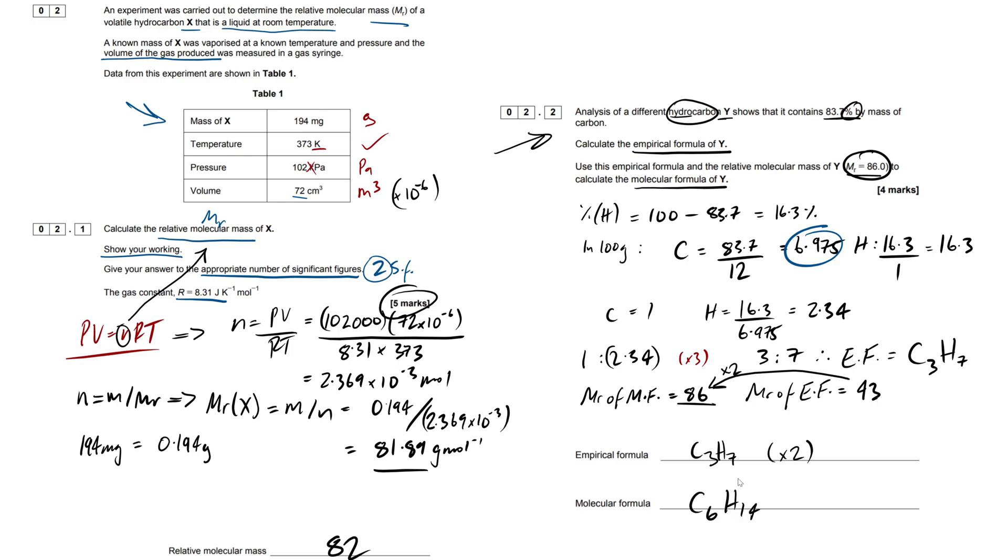Easy as that. Don't get tripped up on these empirical molecular formula questions. Once you understand that empirical formula is the simplest ratio, and then molecular formula is the actual ratio, using the MR, we can compare the two and get our final answer. So hopefully that was a useful video, combining a bit of amount of substance with ideal gas equation and empirical molecular formula. If you enjoyed the video, like, subscribe for future content and best of luck in your upcoming exams. Peace.